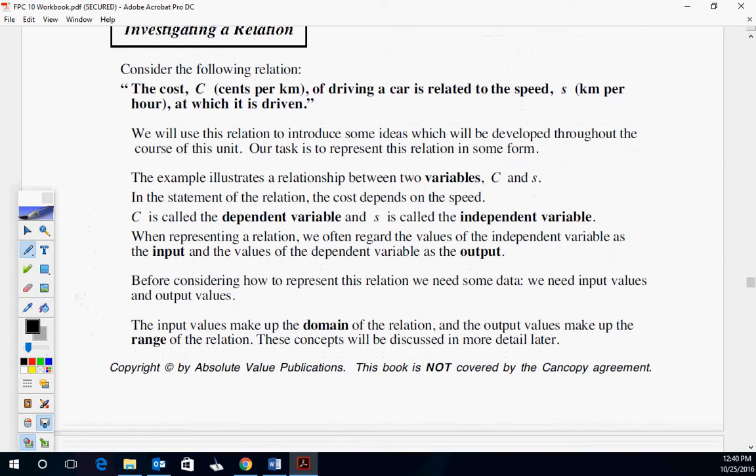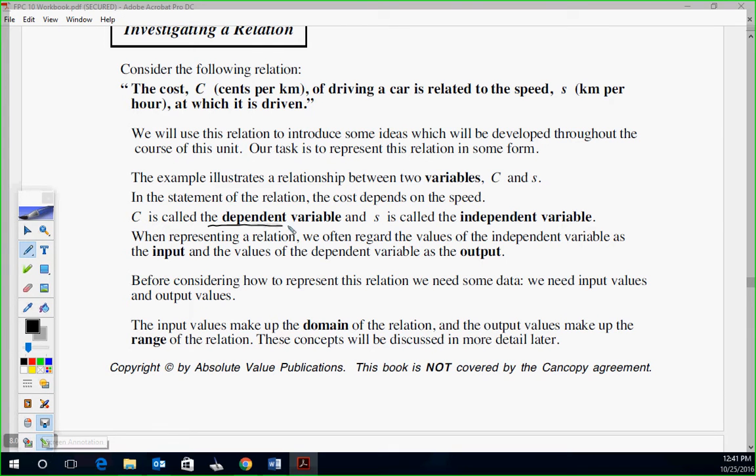Investigating a relation. The cost, C, of driving a car is related to the speed, S, at which it is driven. That's a relationship between the cost of driving at a certain speed. If you're going at a faster speed, you're going to be using more gas, you're going to have more cost. That's a relationship.